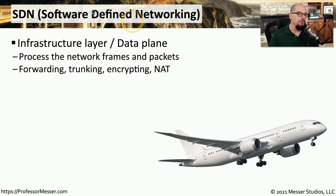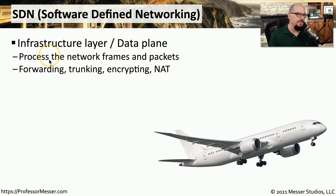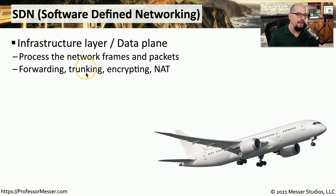We might create an infrastructure layer, often referred to as the data plane — the part doing the real work of the networking component. For example, if this is a switch, it may be processing network frames and packets. If it's a firewall or router, it could be performing forwarding, trunking, encryption, or network address translation. All of that work to forward traffic between locations is handled by the data plane.